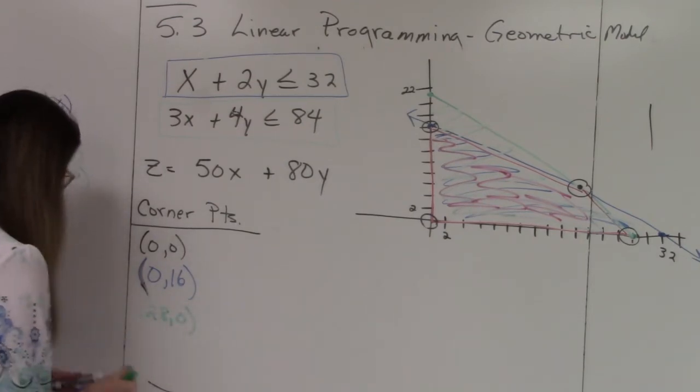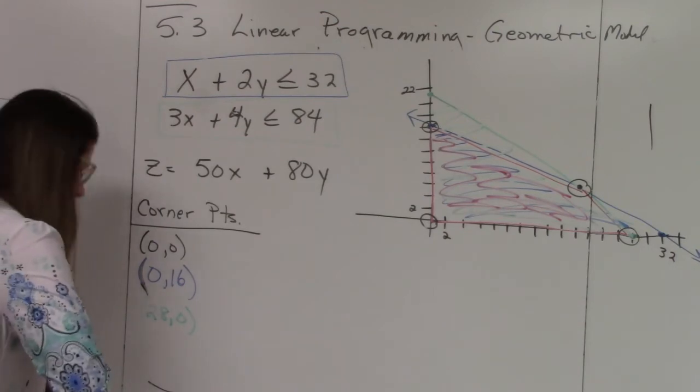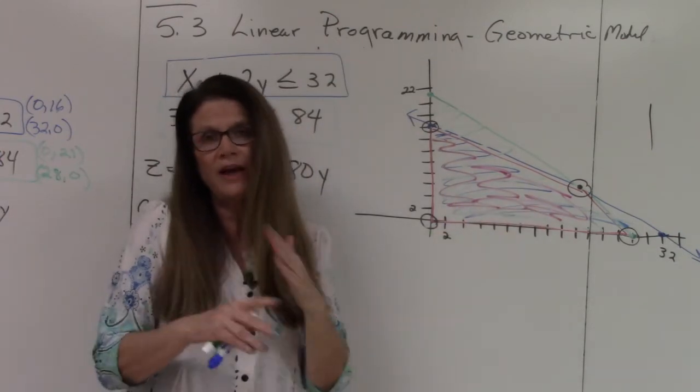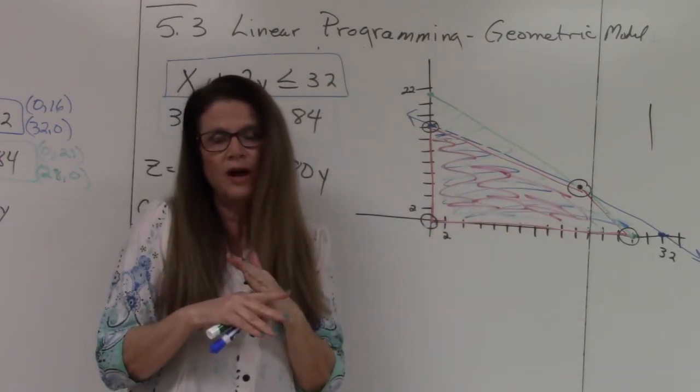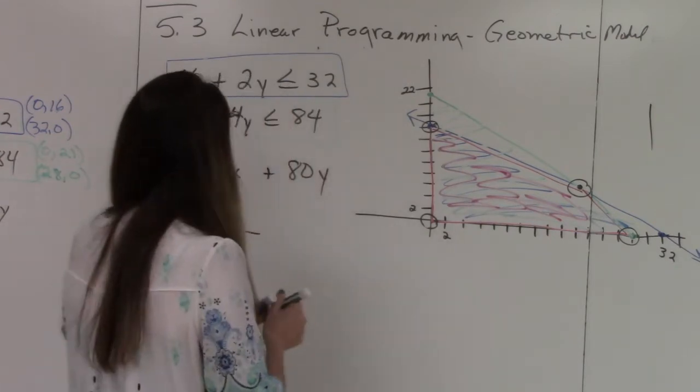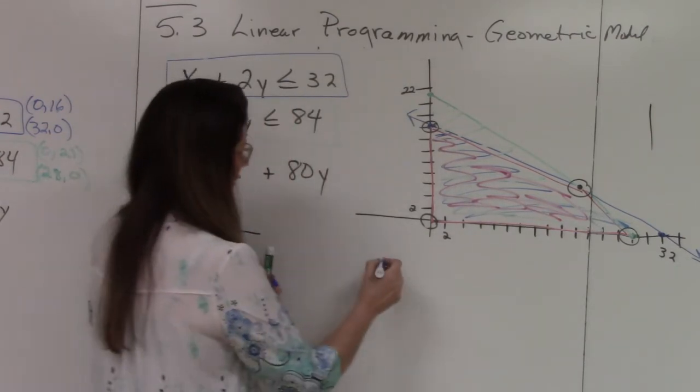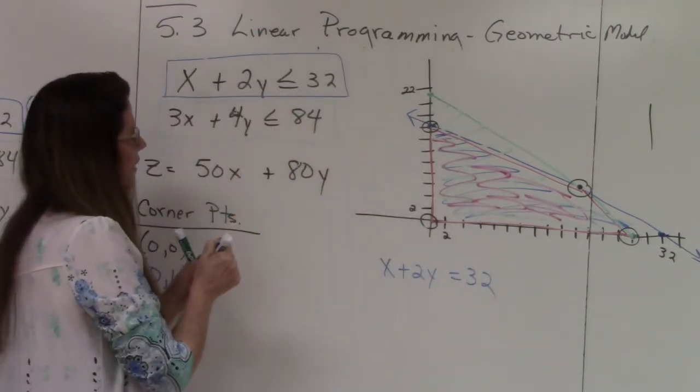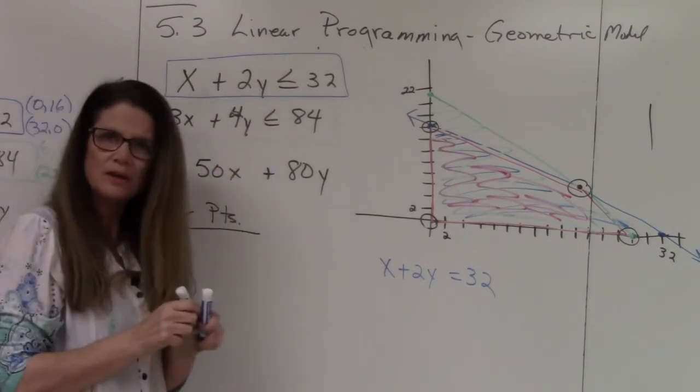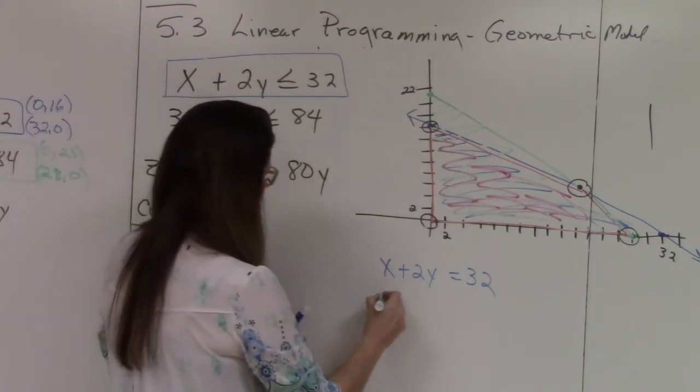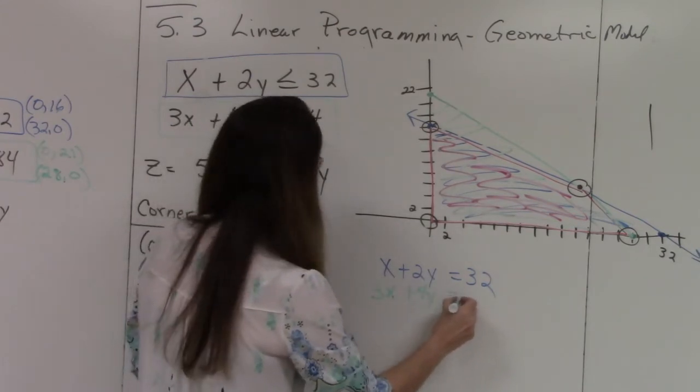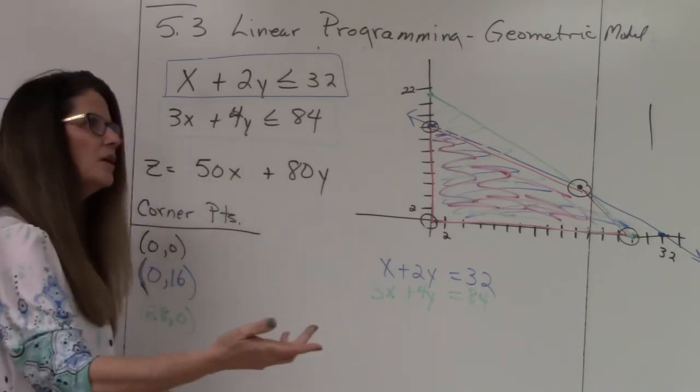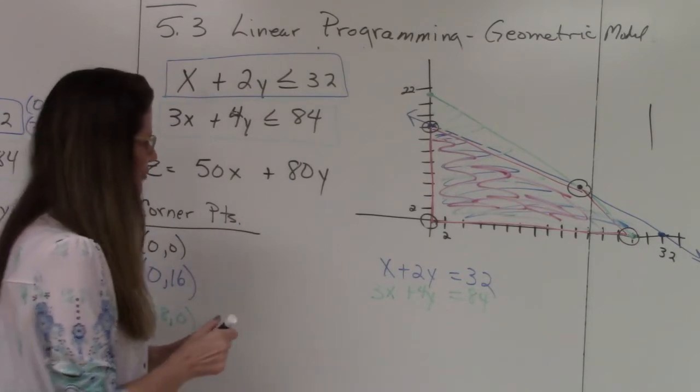Okay. So the only one now that we have to figure out is this point right here. So where the green and the blue cross? Well, remember, the only way to find where the two lines cross is elimination. So we're going to rewrite our equation. So the blue is x plus 2y is equal to 32. And again, since we've already are done with shading, the inequalities don't matter anymore.